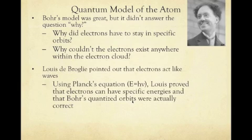Louis de Broglie pointed out that electrons act like waves, like light. Using Planck's equation, de Broglie proved that electrons can have specific energies and that Bohr's quantized orbits were actually correct. He saw that each electron had a specific amount of energy and energy level.